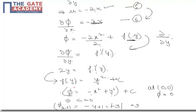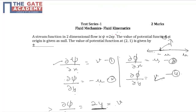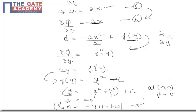So phi equals minus x squared plus y squared. Substituting x equal to 2 and y equal to 1, the answer comes out as minus 3. Since the question asks for the magnitude of the potential function, the magnitude is 3. If you assume clockwise direction as positive you get plus 3, but either way the magnitude is 3 — they are one and the same thing magnitude-wise.